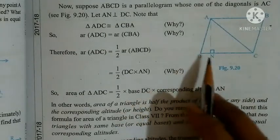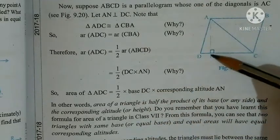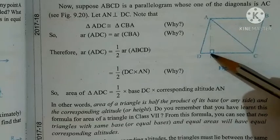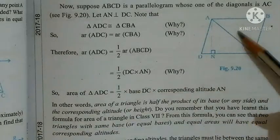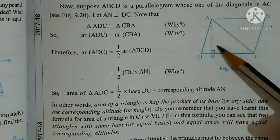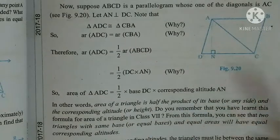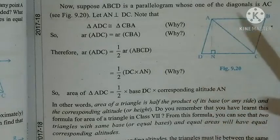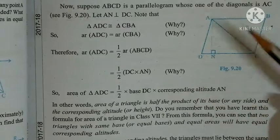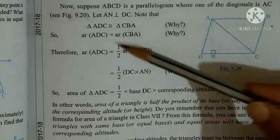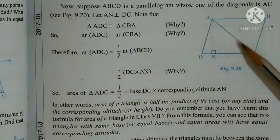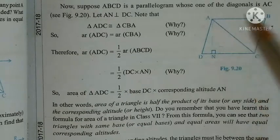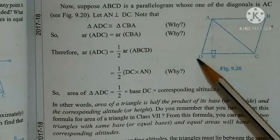AN draw kiya gya hai, DC par perpendicular. Perpendicular means 90 degree angle. In dono triangles ka, yhe doon triangles joh hai, woh congruent hongi. Hamne pichli theorem me ye prove ker chukhe hai, parallelogram ke anndar ke joh do triangle hai, woh congruent hongi, aur jab woh congruent hai, to unka area bhi equal hooga.